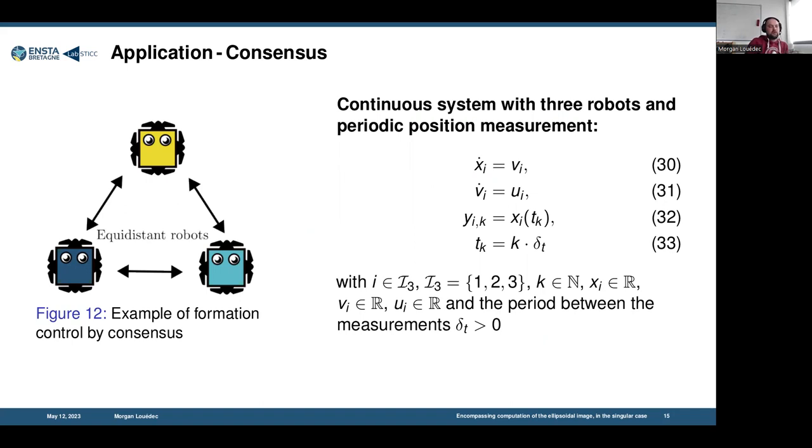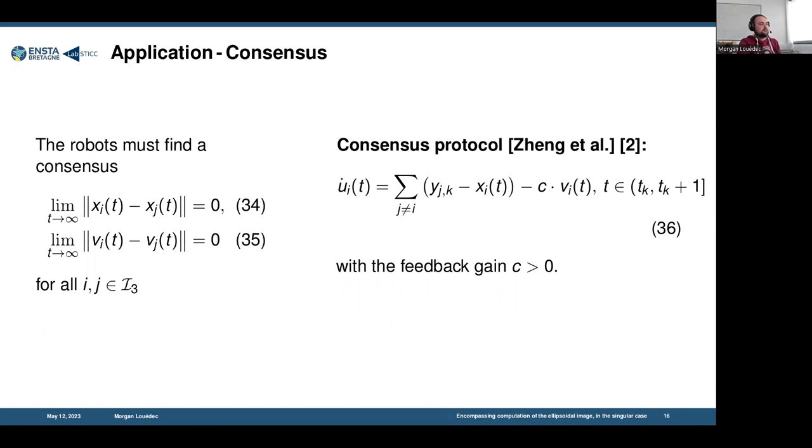Just to finish, I would like to present an application case where we could find these degenerated ellipsoids and why I needed to study them. This is a common example with a group of robots where they have to make a consensus. They have to place themselves to be equidistant. This is an example from an article where they are considered to be a second-order dynamical system where we can control their acceleration. The difficulty here is that they can only measure the position of the other robot at specific moments. So the measurement is discrete.